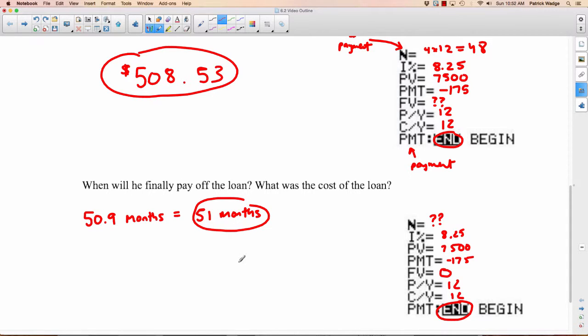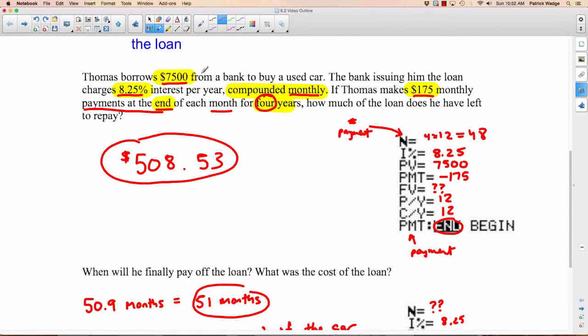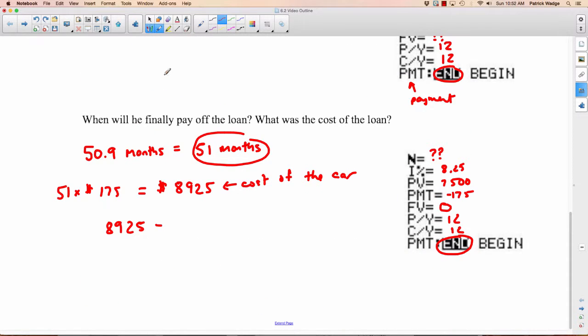That's the answer to when will he finally pay off the loan. Now, what was the cost of the loan? Remember, every month he's paying $175, and he's going to have to pay it 51 times. So that's 51 times $175, which equals $8,925. Is that the cost of the loan? No, that's the cost of the car. How do we know what the cost of the loan is? That's how much extra he paid, how much interest he paid. He paid $8,925, but if he could have paid the whole thing right at the start, he could have only paid $7,500. So the extra amount he paid, that is the cost. That's the interest he paid. If we subtract, you get $1,425. This is the cost of the loan.